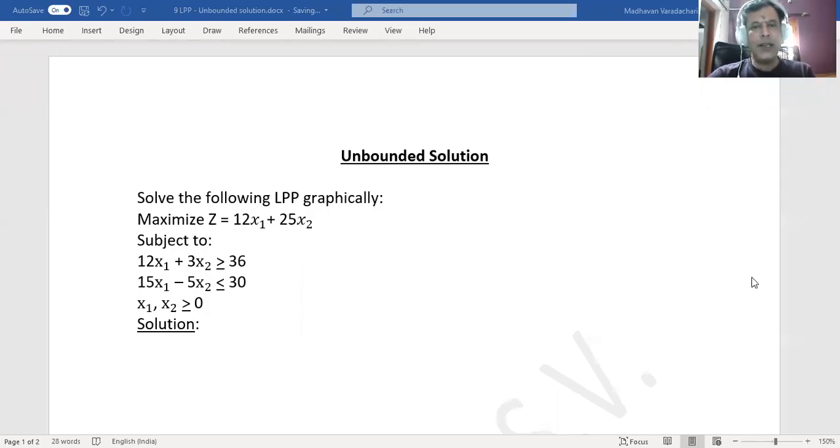Hello everyone, this is in continuation to linear programming problem topic. The next what we are going to see is unbounded solution. This is another special case of solution in a linear programming problem. We'll understand this unbounded solution through this example. Solve the following linear programming problem graphically: maximize Z = 12x₁ + 25x₂ subject to 12x₁ + 3x₂ ≥ 36, 15x₁ - 5x₂ ≤ 30, and x₁, x₂ ≥ 0.